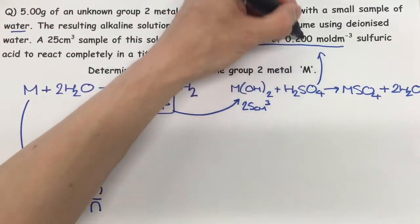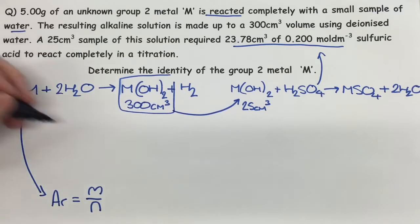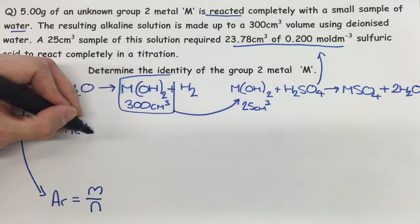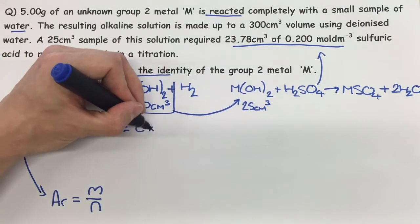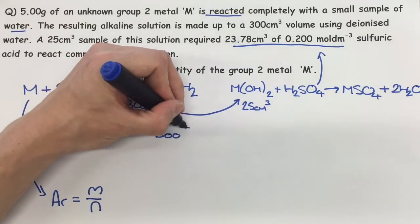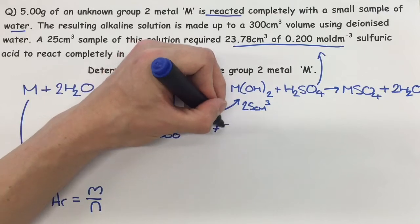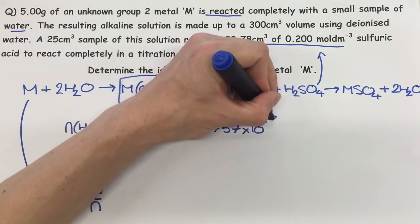First thing we can do is use the information for the H₂SO₄. Since you have two pieces of information, you can use one of the triangles. So moles of H₂SO₄ equals concentration times volume — as long as you convert the volume over 1000 — which is going to equal 4.757 × 10⁻³.